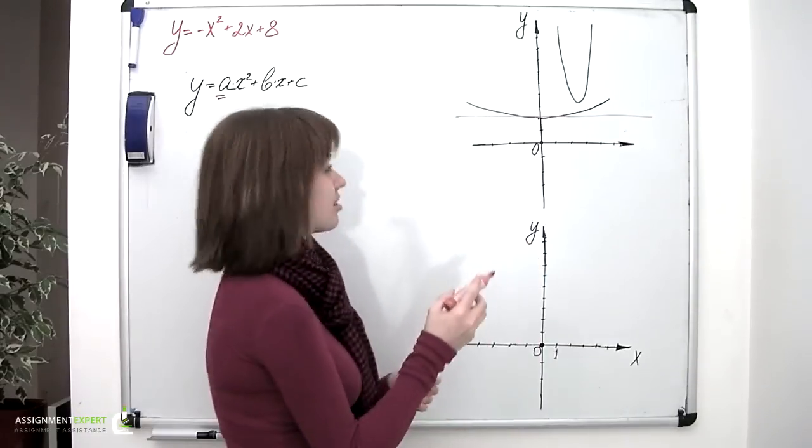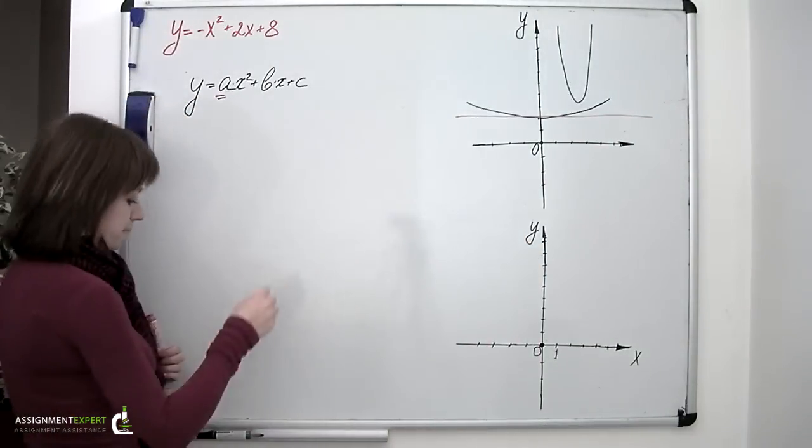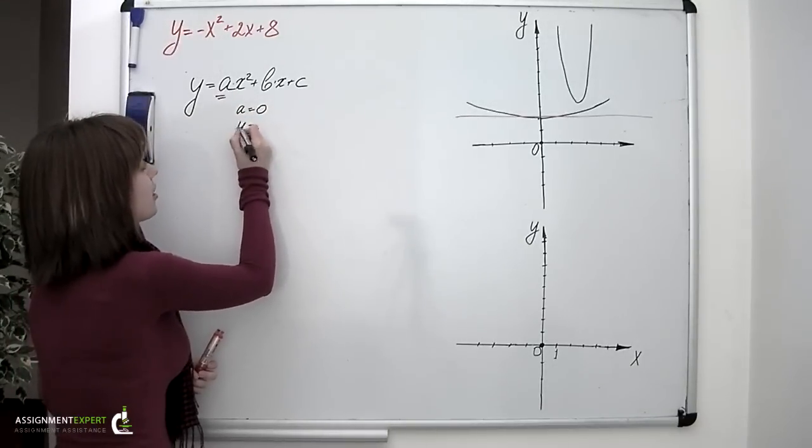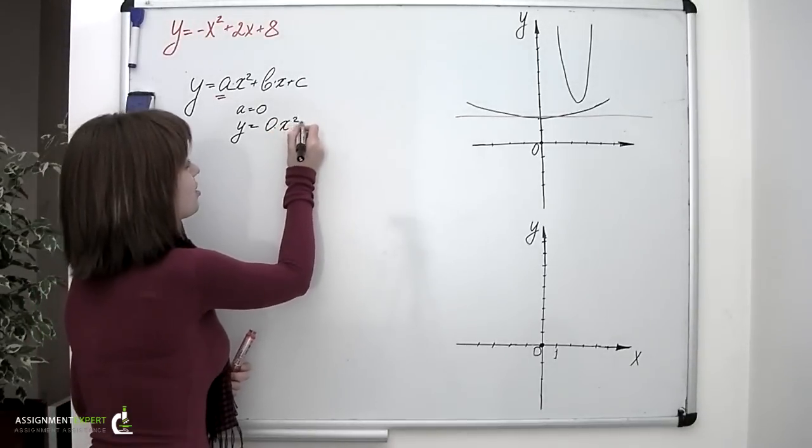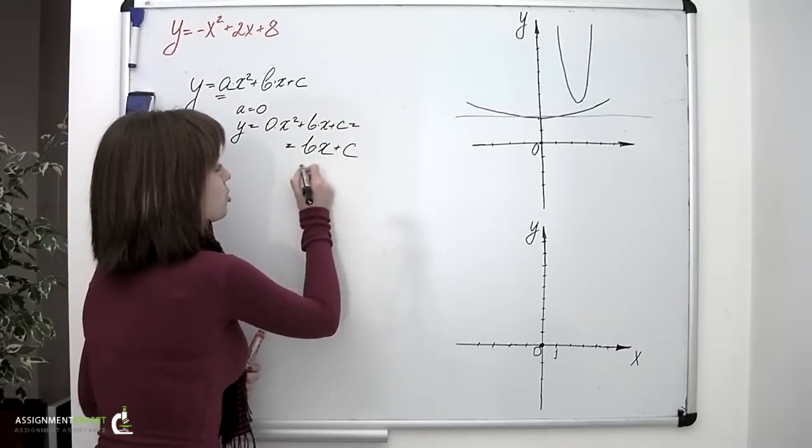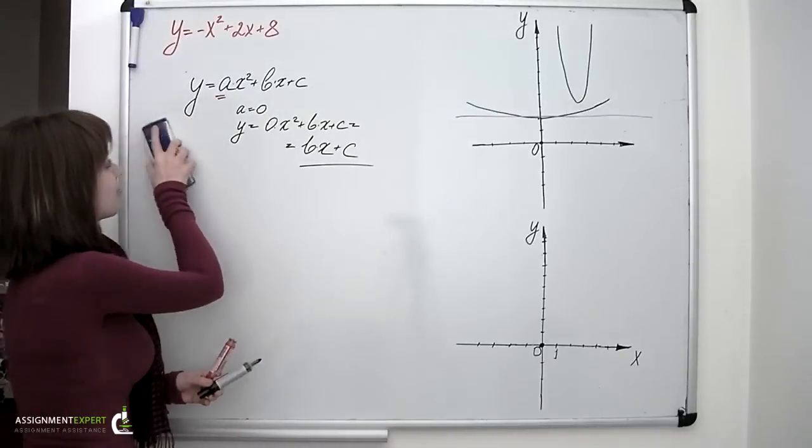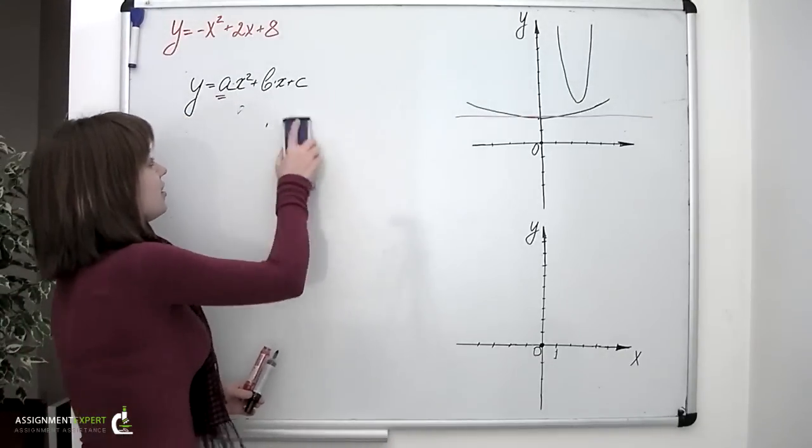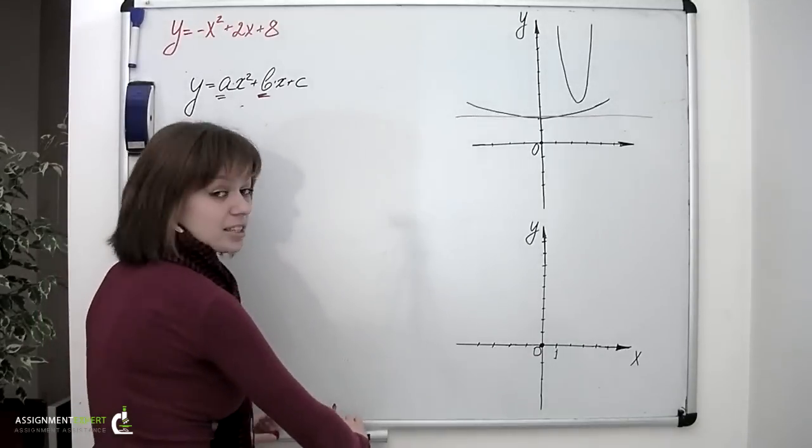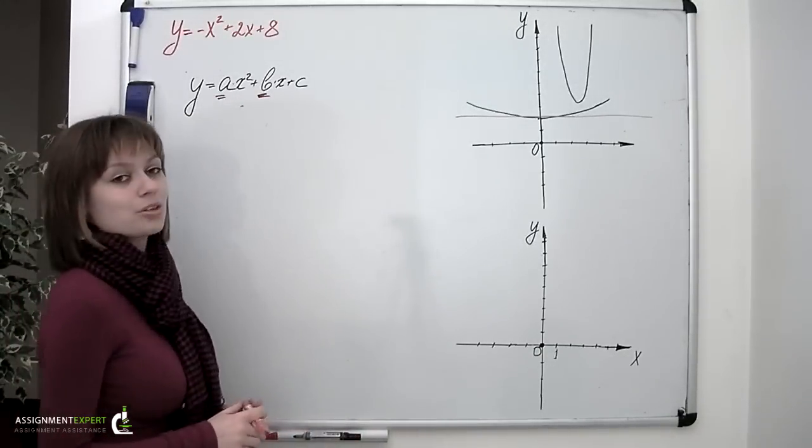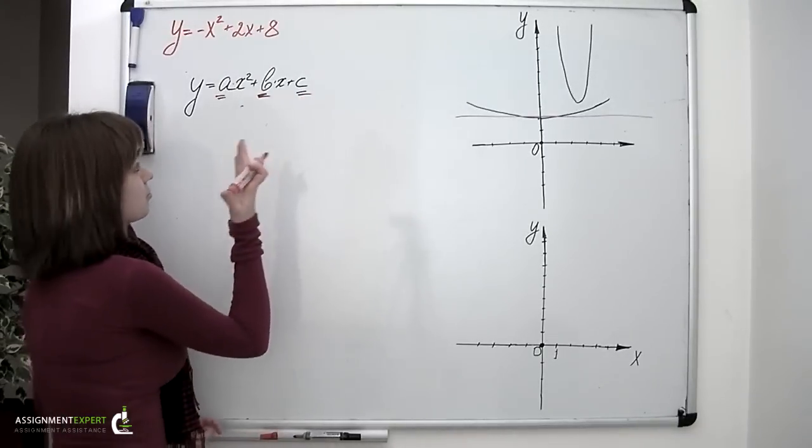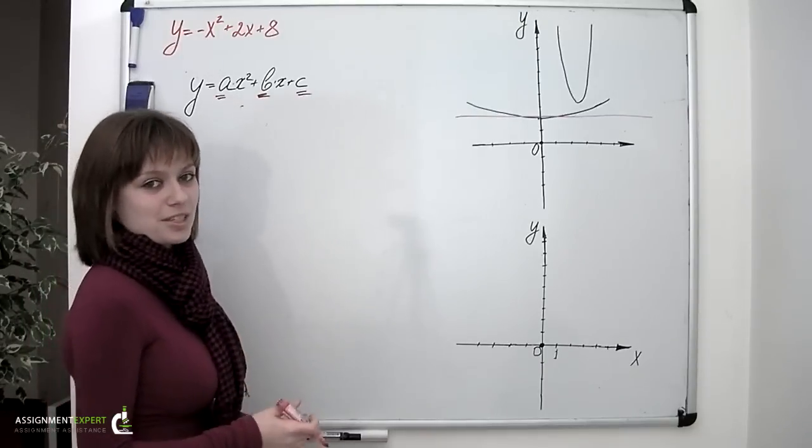Which, by the way, happens if a equals to zero. And then we have y equals to zero times squared x plus b times x plus c, or b times x plus c, which is an equation of a straight line. Then, there is b, a coefficient which carries no obvious information, but it does influence the parabola's shape and position on the coordinate plane. And finally, there is c, which is also called a free term, which is the parabola's y-intercept, the point where the graph crosses the x-axis.